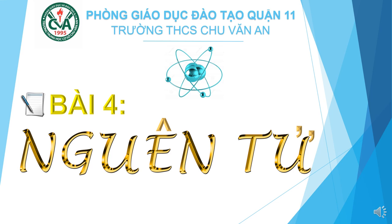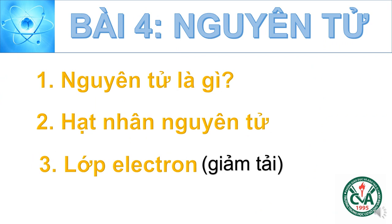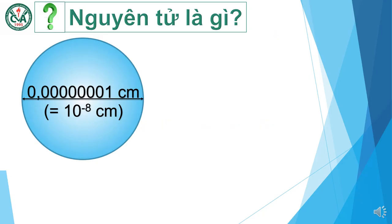Ngoài ra, chúng ta còn có những kiến thức nào khác về nguyên tử — các em sẽ tìm hiểu ở bài học ngày hôm nay. Bài 4: Nguyên tử. Bài học hôm nay sẽ tìm hiểu nguyên tử là gì, hạt nhân nguyên tử và lớp electron. Lớp electron là nội dung được giảm tải. Nguyên tử là gì? Hãy hình dung nguyên tử như một quả cầu, đường kính quả cầu vào cỡ 10 mũ trừ 8 cm — một con số rất bé.